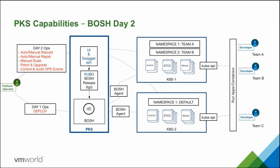BOSH took care of detaching those persistent disks and reattaching them as it rebuilt the VM, bringing everything to a clean state from day one and maintaining that through the day-two lifecycle. For scaling, I could simply go into one of those YAML manifest files and tick up instances from two master nodes to three, or from four worker nodes to eight — a quick, easy scale. PKS makes that even easier through a UI or API interface.